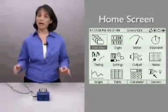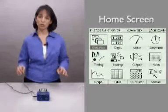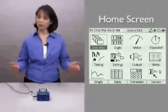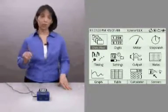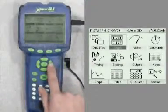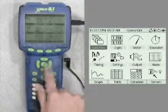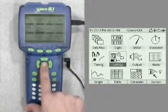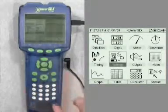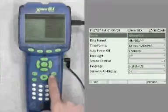From this screen you can access any of the 12 GLX screens represented by these 12 icons. To move through the icons, push the arrow keys. To open up one of the screens, push the check mark after you've selected it. Remember that at any time, even during data collection, you can get back to the home screen by pushing this home button.